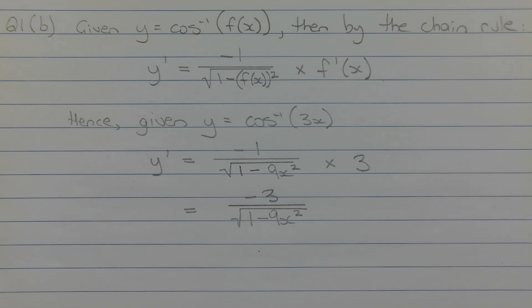Now in this case, our f of x is 3x. Hence, given y equals inverse cos of 3x, then the first derivative y dash is equal to negative 1 over the square root of 1 minus 3x in brackets squared, which is 9x squared when expanded,